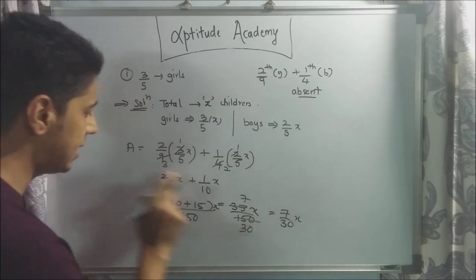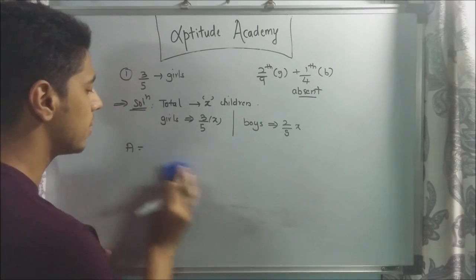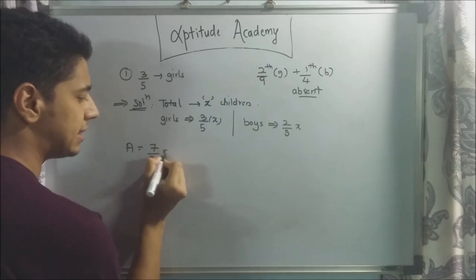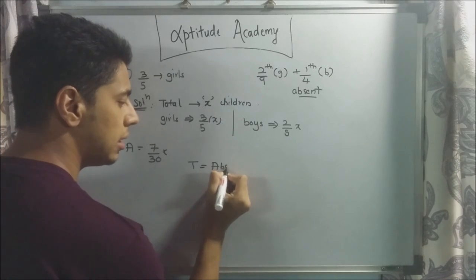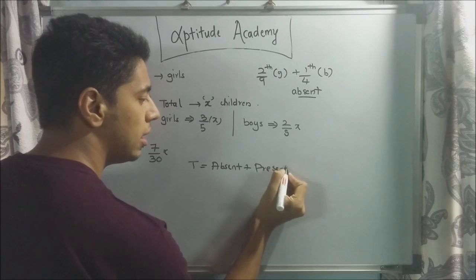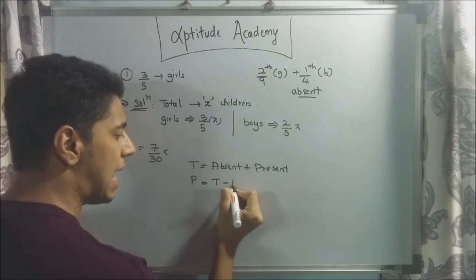7/30 x are the ones that are absent. We will just rewrite this again. The absent as we just found out is 7/30 x. The total number of children will be absent plus present. The present will be total minus absent.